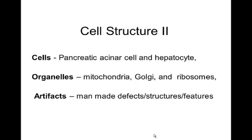Today we're going to talk about cell structure two. We'll talk about some cells: the pancreatic acinar cell in the pancreas and the hepatocyte in the liver. We'll also talk about some organelles — mitochondria, Golgi apparatus, and ribosomes — and we'll conclude with artifacts. These are man-made defects, structures, or features that should not be there.